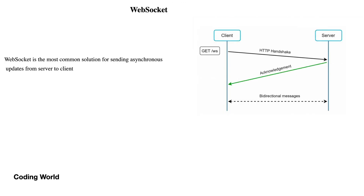The third strategy is WebSocket. This is the most common solution for sending asynchronous data from server to client. This is the main benefit of WebSocket, which is why most chatting services use it. In WebSocket, an HTTP handshake happens between client and server. Once that handshake happens, an upgrade signal is sent to the client and the WebSocket connection is initiated. A WebSocket connection is bi-directional — you can send messages from server to client and from client to server.